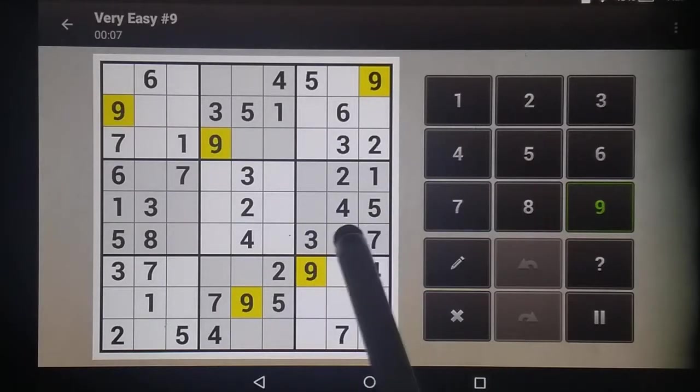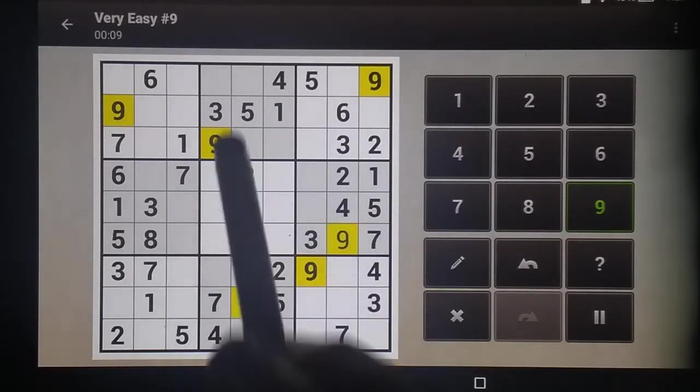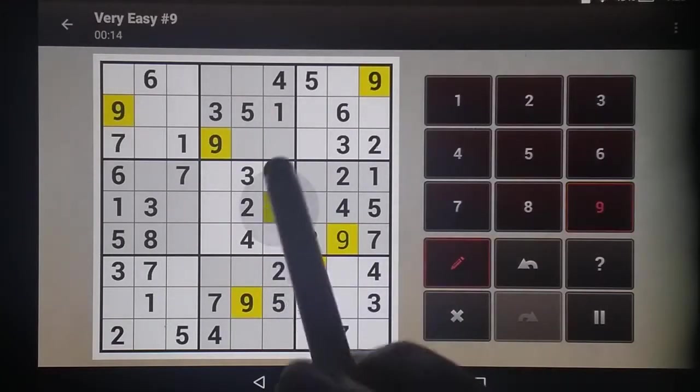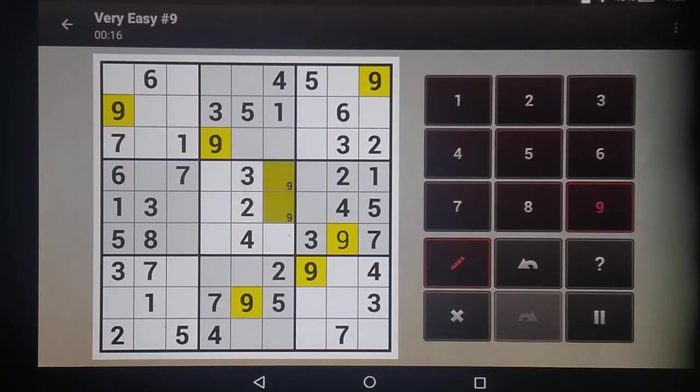This column is blocked, so there's a 9. This column is blocked, this row is blocked, but I don't know which one of those two it's going to fall in. I do know it's going to fall into one of those, though.